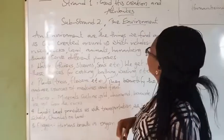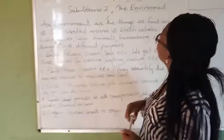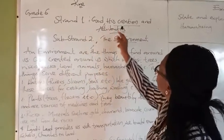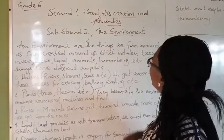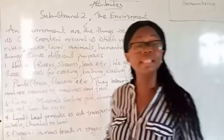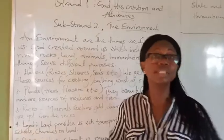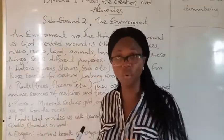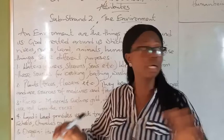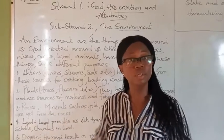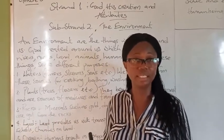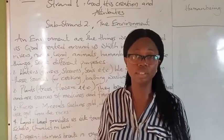The environment. The environment is still under Strand 1 — God, His creation and the attributes. The environment are the things we see around us, like we know already. When you look around you, whatever you see around you is regarded as an environment. They are all created by God.